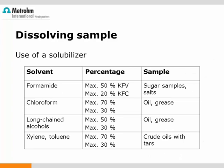Solubility promoters are suitable for both volumetric and coulometric techniques. There are several solvents or combinations of solvents that can be used depending on the sample. Please note there is a limit to how much solubilizer can be added. For coulometric titrations, the generator electrode with diaphragm is recommended as soon as more than 10% of solubilizer is added — an exception is formamide, for which you should always use the generator electrode without diaphragm.